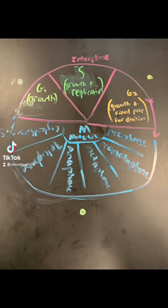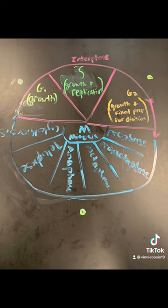First in cell division there is a phase called interphase. Inside interphase there are three main checkpoints: G1, S, and G2. Inside G1 is where the cell grows first and protein synthesis happens.